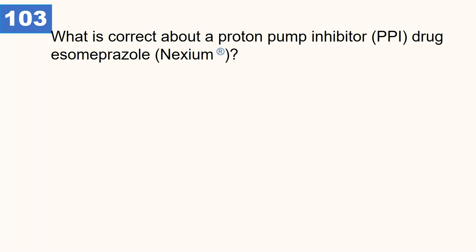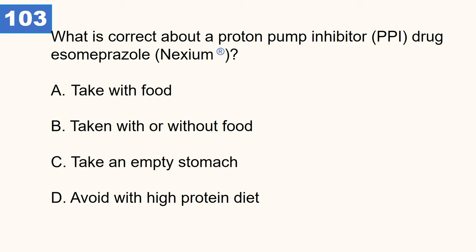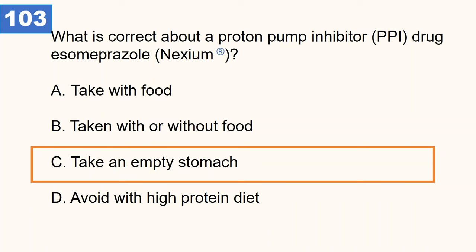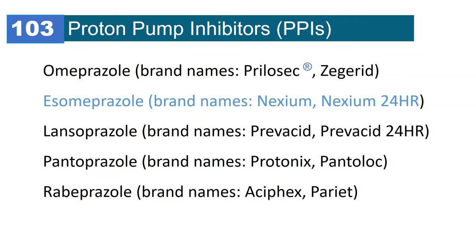What is correct about proton pump inhibitors — for example, esomeprazole brand Nexium? All proton pump inhibitors are taken on an empty stomach — that is the best response. Examples of PPIs include omeprazole brand Prilosec, esomeprazole brand Nexium, lansoprazole brand Prevacid, pantoprazole brand Protonix or Pantoloc, and rabeprazole brand Pariet.